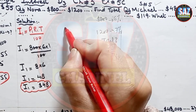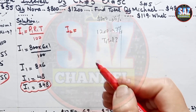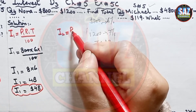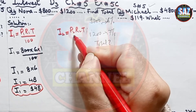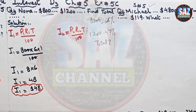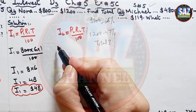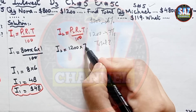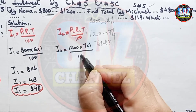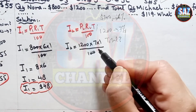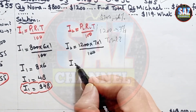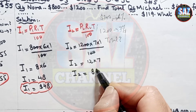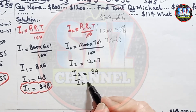Now for the second investment, I2 = P2 × R2 × T / 100. Replacing values: principal is $1,200, rate is 7%, time is 1 year, upon 100. Simplifying the two zeros gives I2 = 12 × 7 = $84.